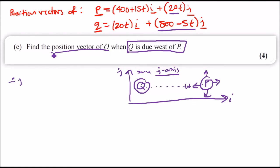Equating the j-axis, we should have 20t from P equals 800 minus 5t from Q. When we solve this and find the value of t, we can plug it back into the Q equation. Let's solve this. Plus 5t across, we're going to have 25t equals 800.